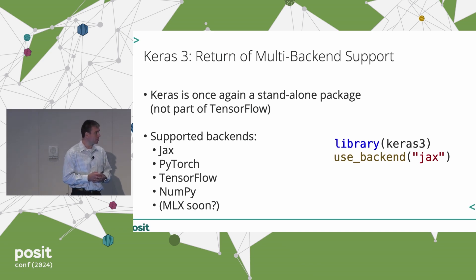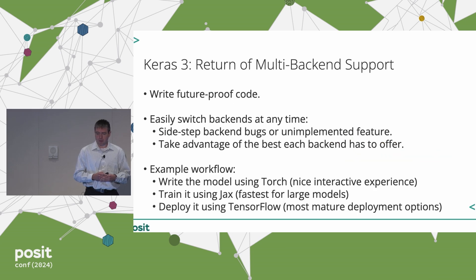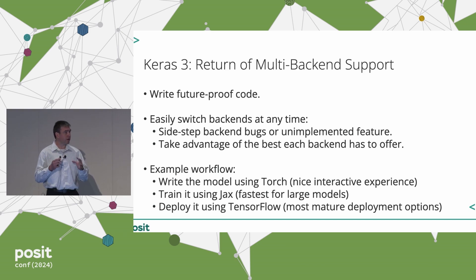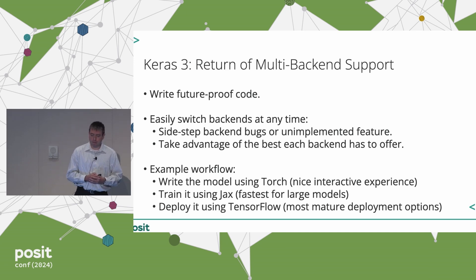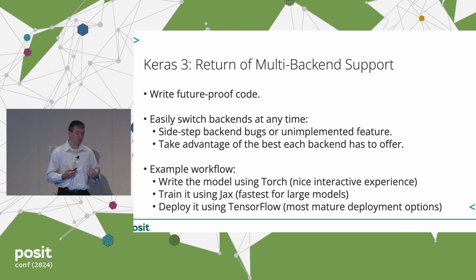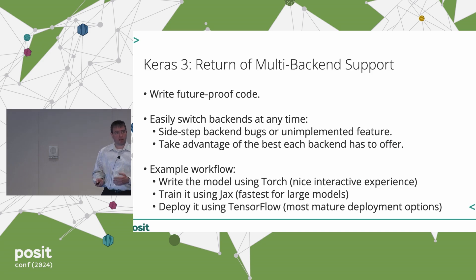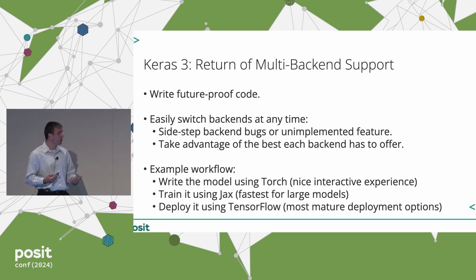The benefits of multi-backend support are that it lets you write future-proof code. The high-level Keras API insulates you from some of the churn in the low-level framework space. You can easily switch backends at any time in a project — so if you encounter a bug with one backend, you can just sidestep it by switching to another. More generally, it enables workflows where you take advantage of the best that each backend has to offer. For example, you can develop your model with Torch as your backend, which gives a nice interactive experience, then switch to JAX to train it for the fastest performance, and then switch to TensorFlow when you're getting ready to deploy, which has the most mature deployment options.